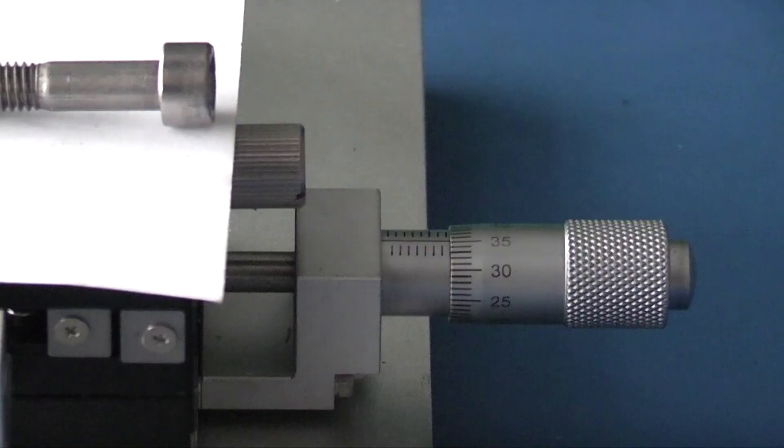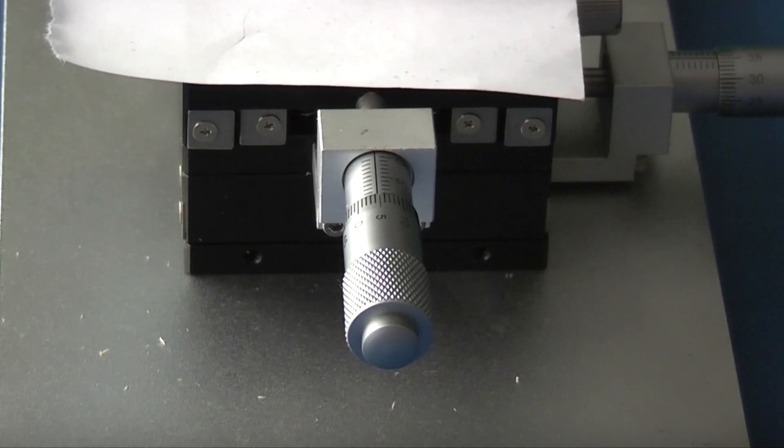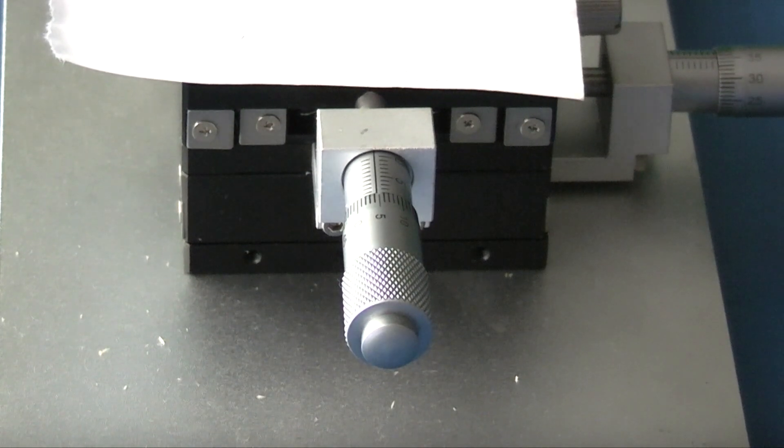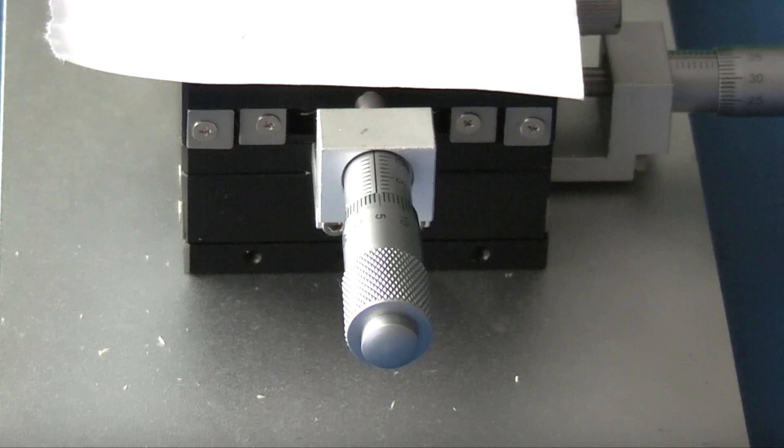The reading on the micrometer is 7.36 and the reading on that micrometer is 9.55. I've remarked the black lines on the screen so you can see easier.